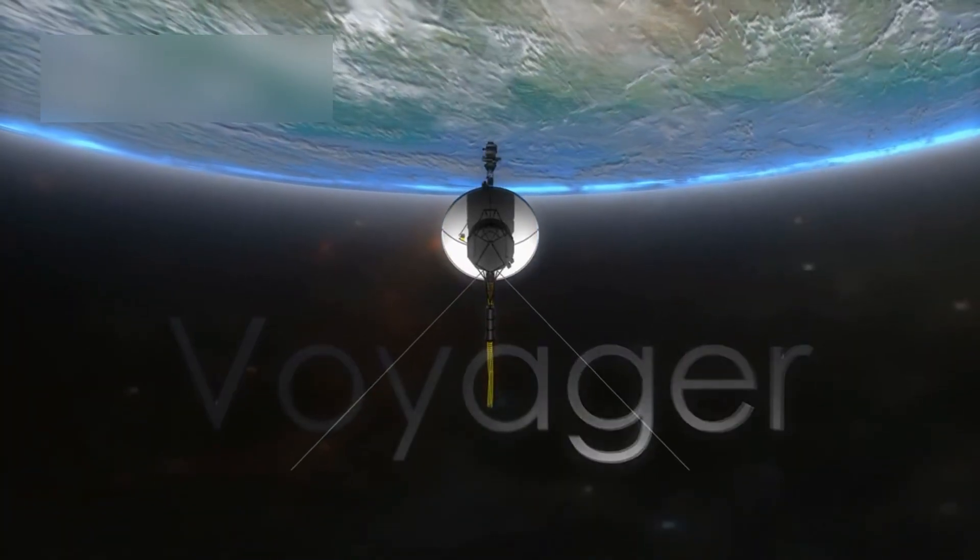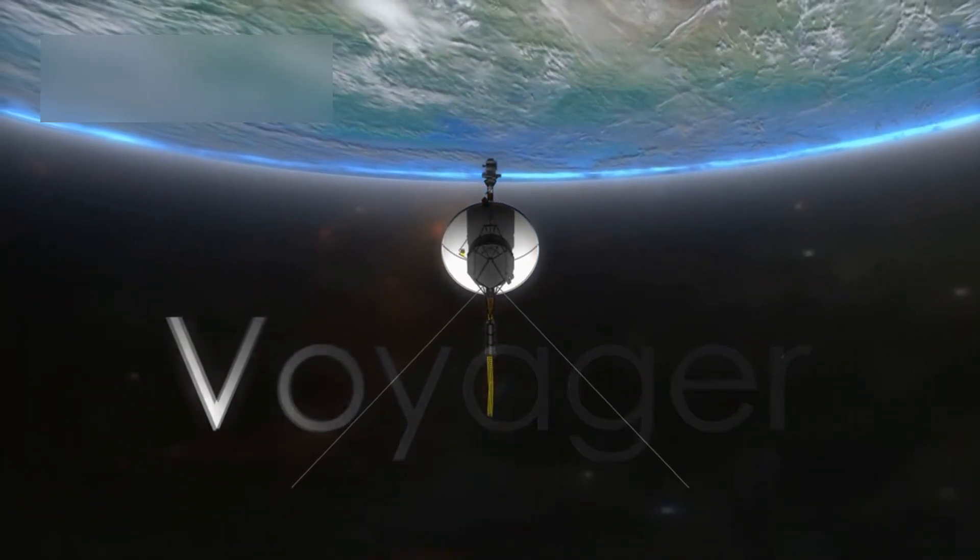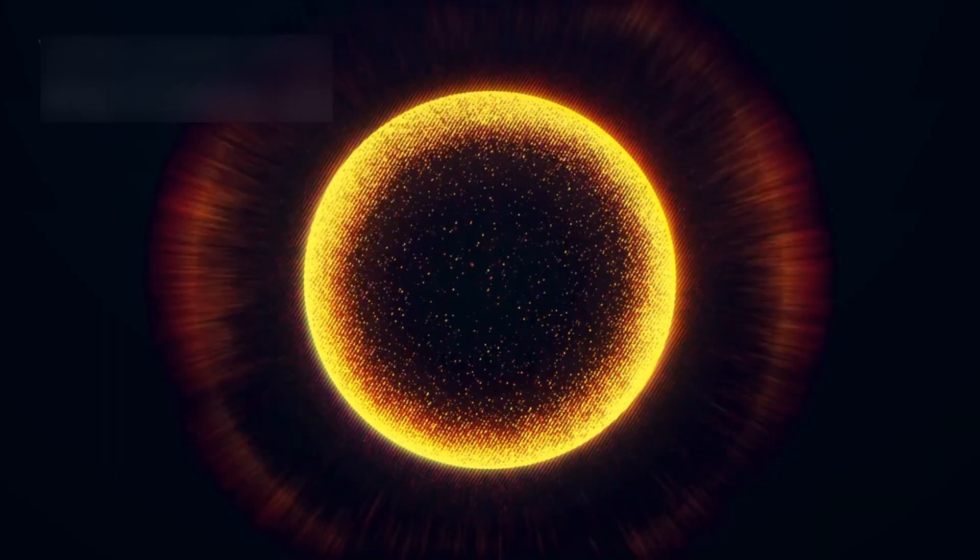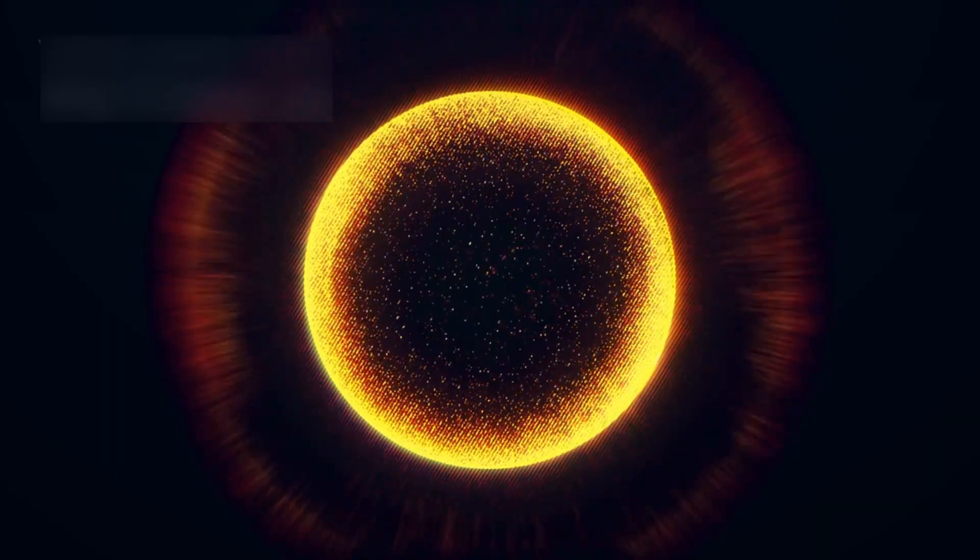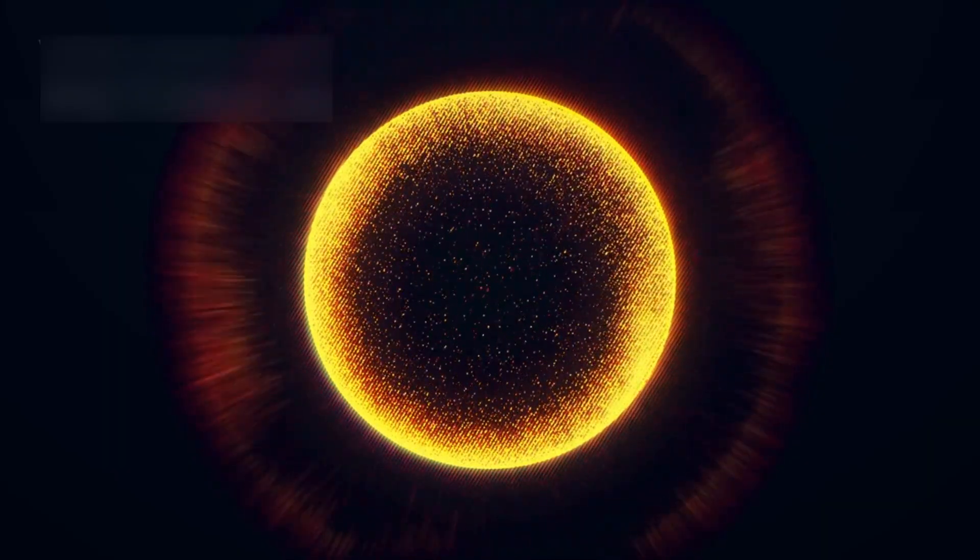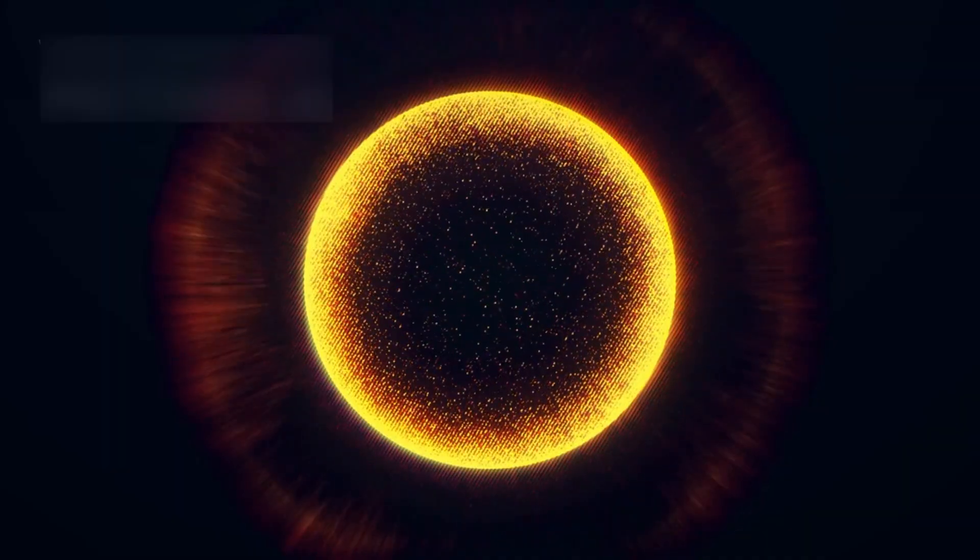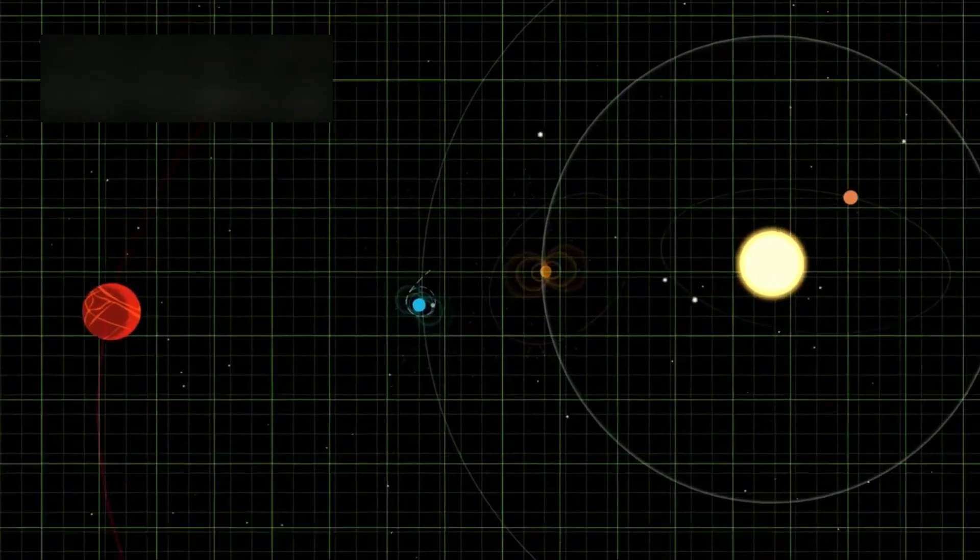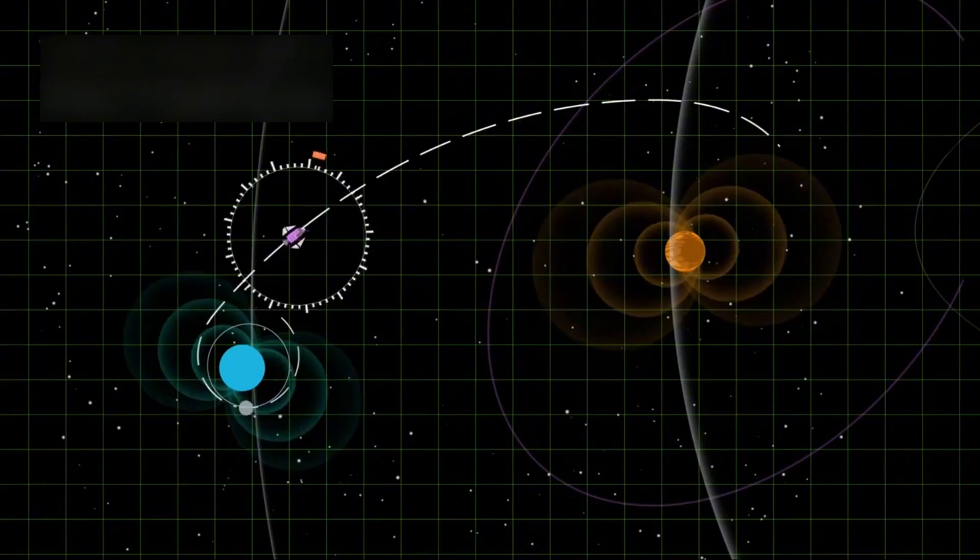Still, Voyager 1 keeps transmitting valuable data, proving how well it was built. Because of its unique position, Voyager 1 has helped scientists learn how interstellar winds interact with the sun's energy.